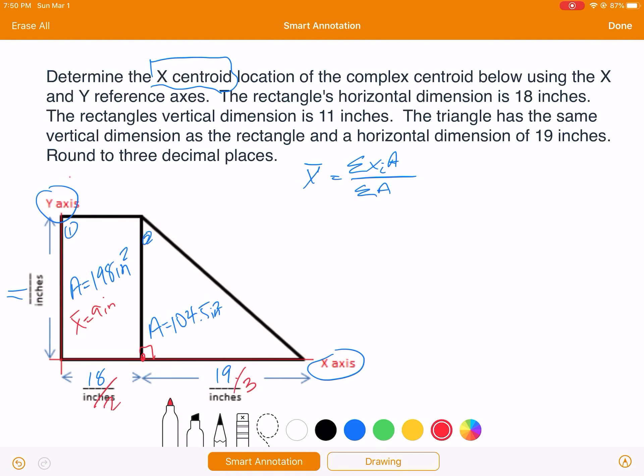For a triangle we divide by three, but you'll notice that's from the right angle which is actually 18 inches over, so whatever I get for the x bar here it's going to be equal to 18 inches plus 19 divided by 3, which is 6.3 repeating, right? So a total of 24.3 repeating.